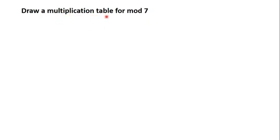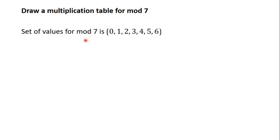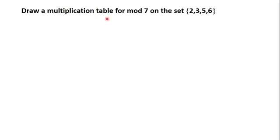For example, if the question had asked us to draw a multiplication table for mod 7, the first thing we would do is define the set of values used in mod 7, which are 0, 1, 2, 3, 4, 5, 6. Then we would use this set to draw the table and multiply the numbers in mod 7. But this time the question is asking us to draw a table for mod 7 on the set {2, 3, 5, 6}.